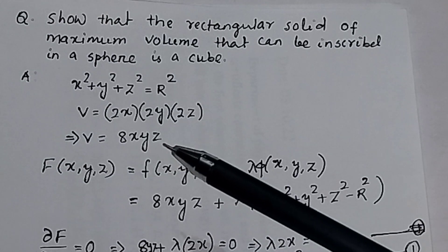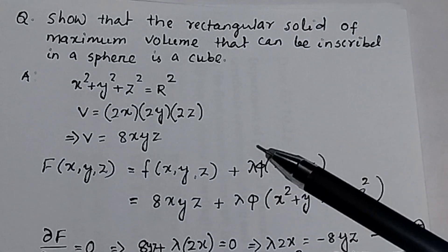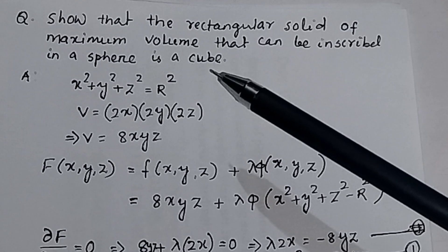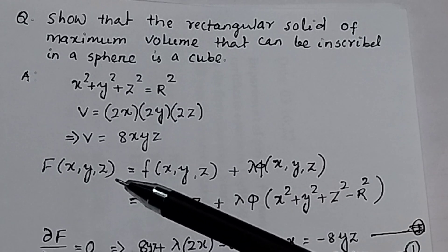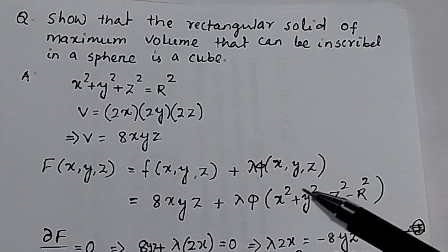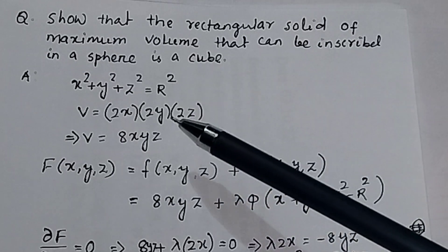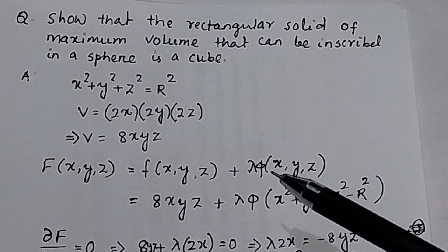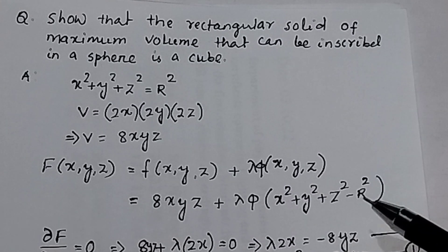So the volume will be equal to 8xyz, and x² + y² + z² = r² is the constraint or condition given. From Lagrange's constraint maximization technique, we know the function F(x, y, z) = f(x, y, z) + λ·φ(x, y, z). Here the objective function is 8xyz, λ is the Lagrange multiplier, and the constraint is φ(x, y, z) = x² + y² + z² − r², which is for the sphere.